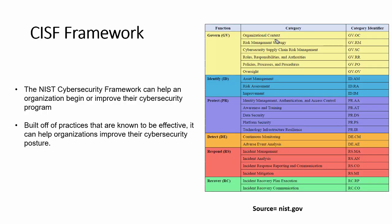In my previous video we covered organization context, and today we're going to discuss NIST Risk Management Strategy. According to the schedule, I will try to cover all these functions. Today we're going to discuss what mandatory documentation is required in Risk Management Strategy and how to implement it in the organization aligned with the NIST framework.